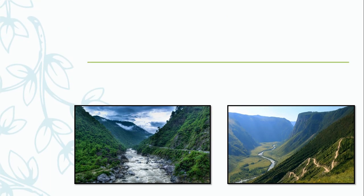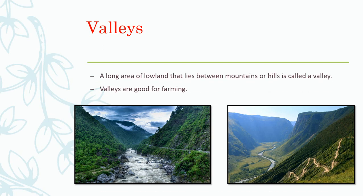And the last type of land by looking at this. Yes. Valleys. Now, what are valleys? A long area of low land that lies between mountains or hills is called a valley. Valleys are good for farming.